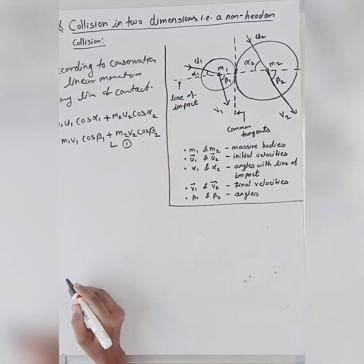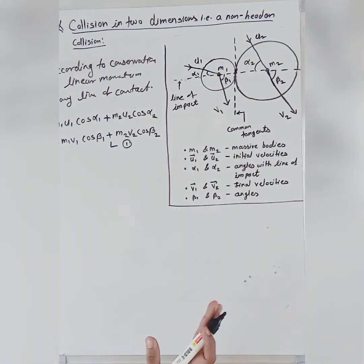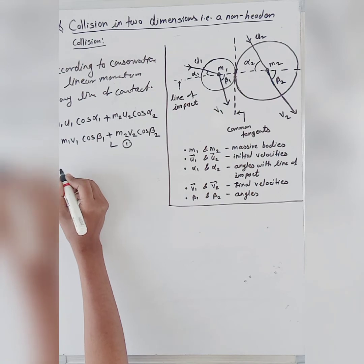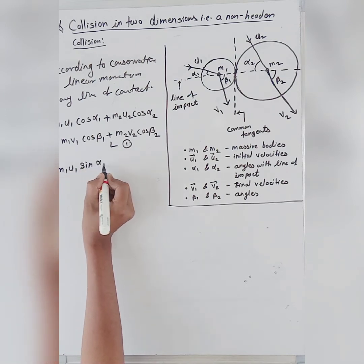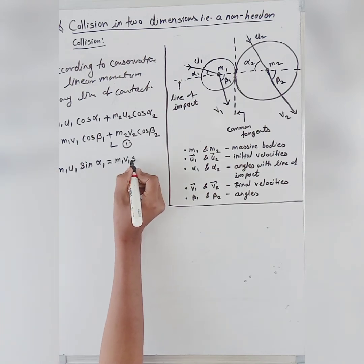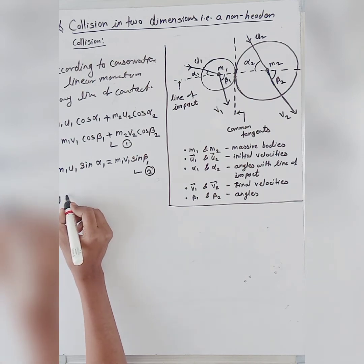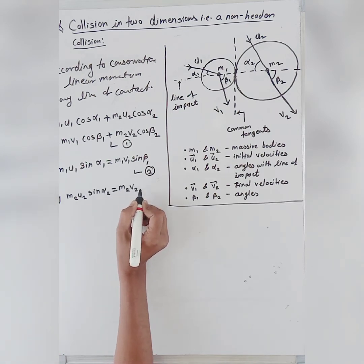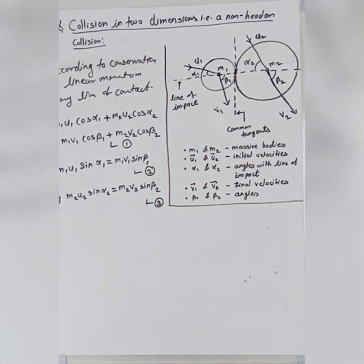As there is no force along the common tangent, perpendicular to the line of impact we can write: M1·U1·sin(alpha1) = M1·V1·sin(beta1) — this is Equation 2. Similarly, M2·U2·sin(alpha2) = M2·V2·sin(beta2) — this is Equation 3.